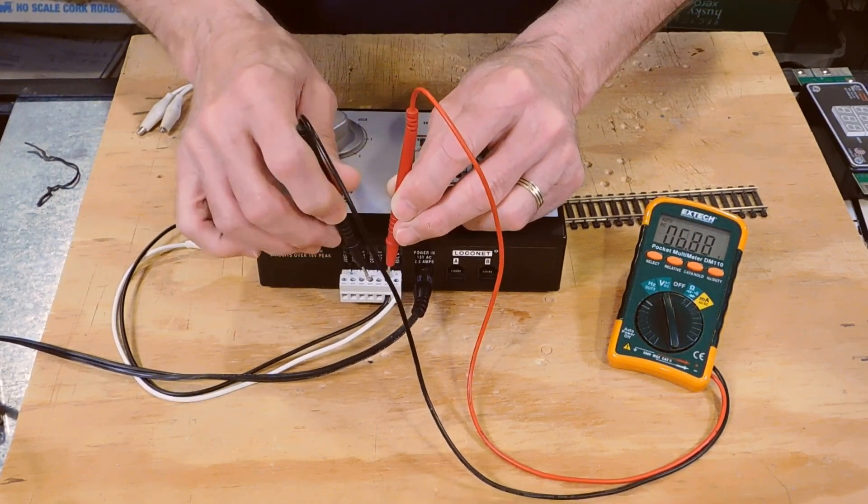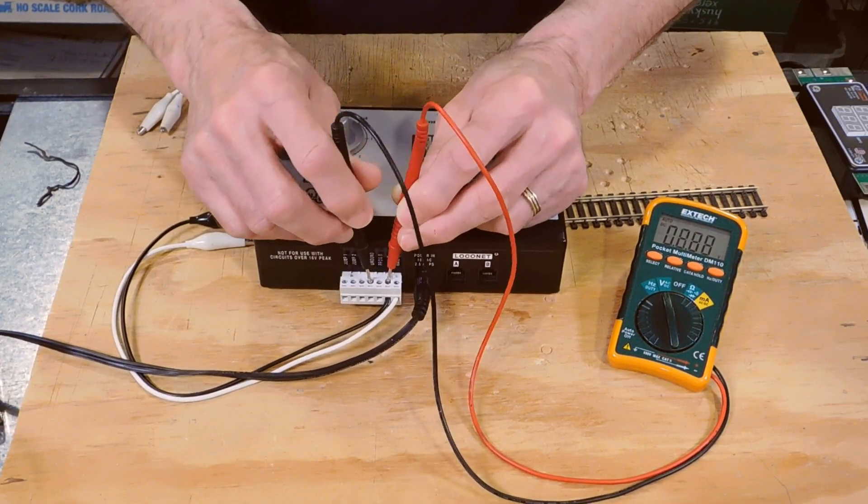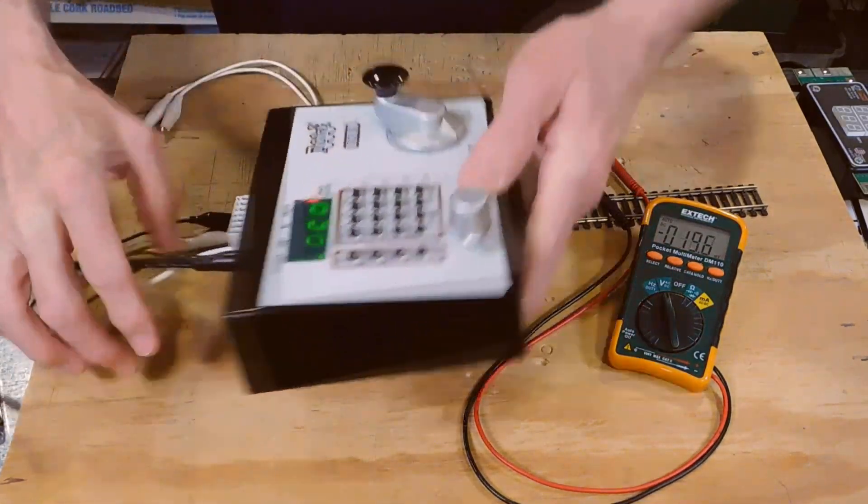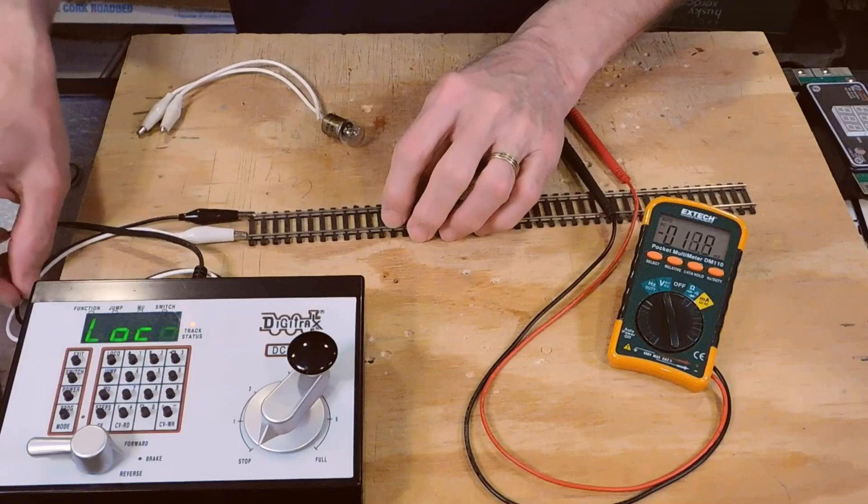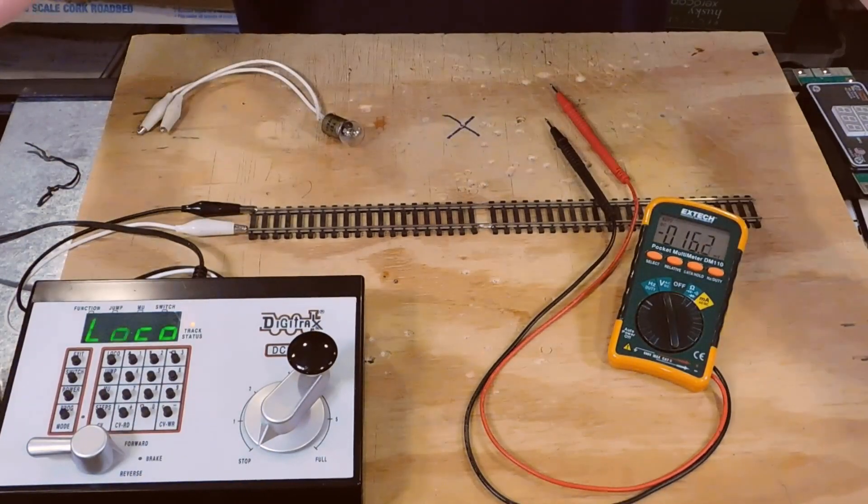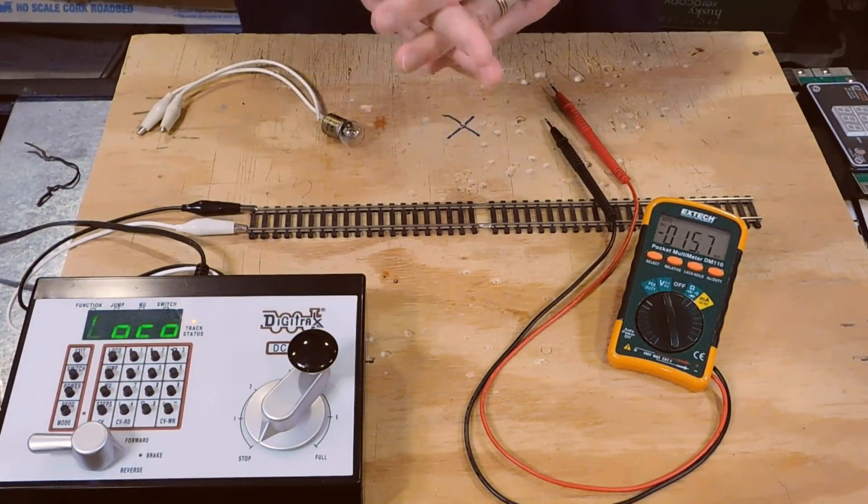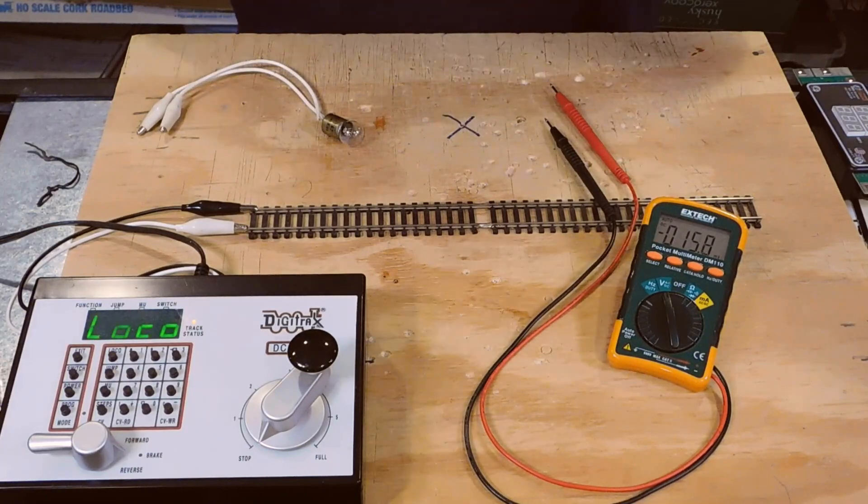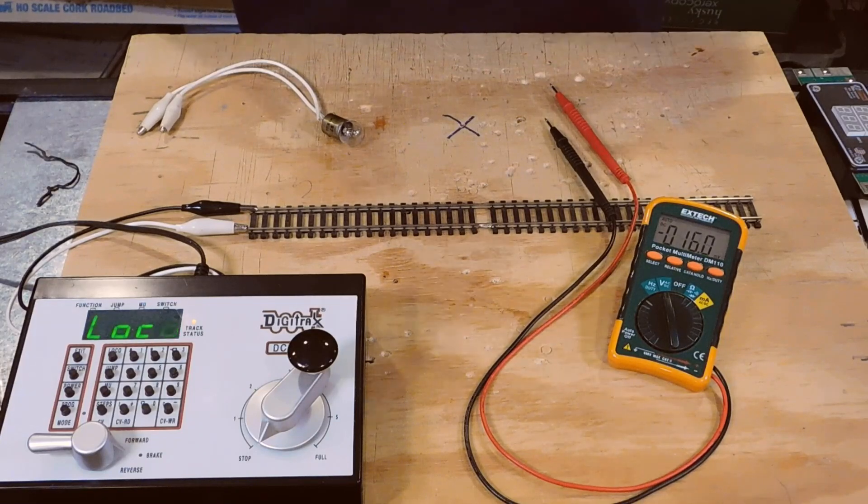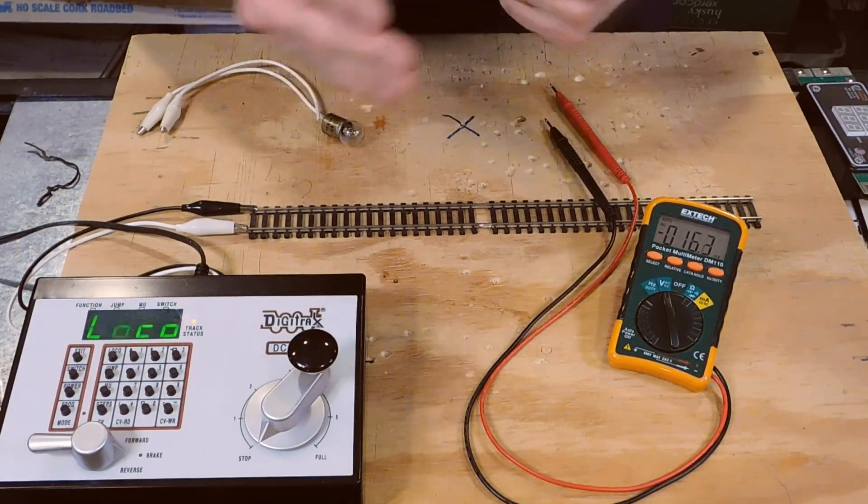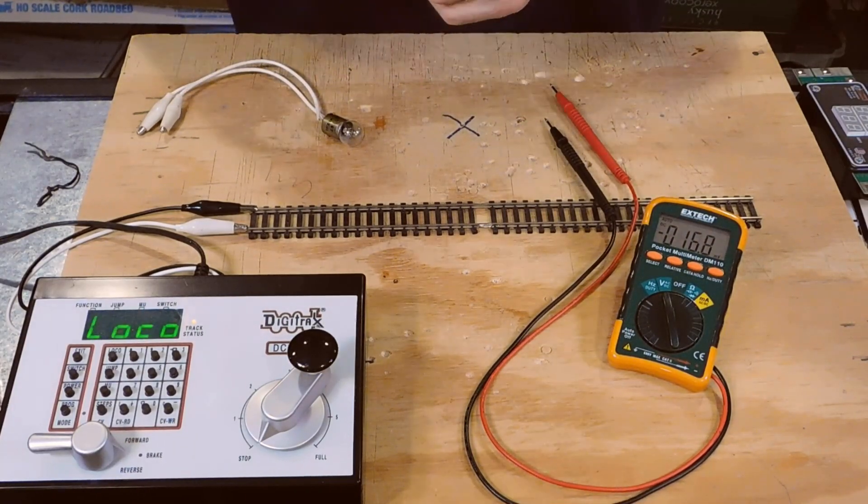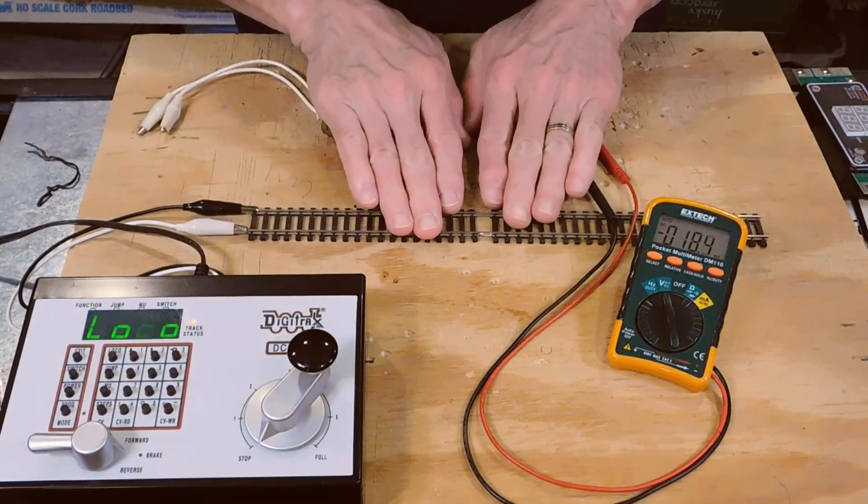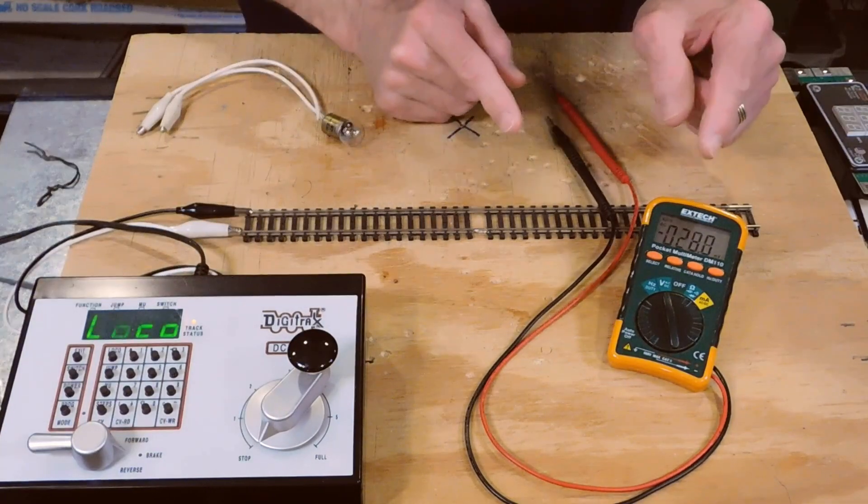This works with all Digitrax command stations and boosters. You just measure rail A to the ground and rail B to the ground on the command station or booster, and add those two together. It will give you a reasonable approximation of what the voltage is. Digitrax tells you to do this under a no load situation, which means no locomotives on the track, no lights attached, nothing. The reason is you typically will see a sag in voltage when you put it under a load. Can you do that with other DCC systems? I honestly don't know. I have tried with MRC and Bachmann. Their components appear to be double insulated, which means there's no external access to a ground contact. Check your manual.